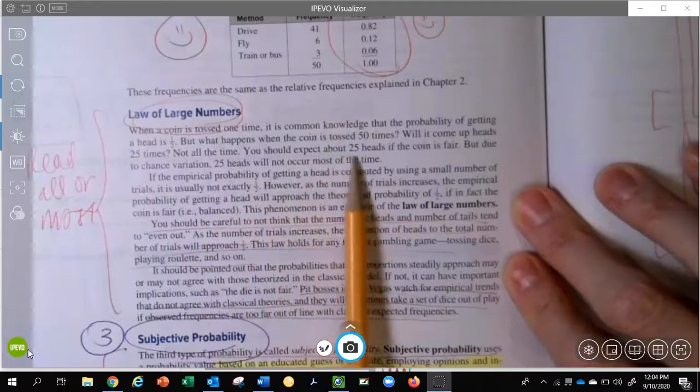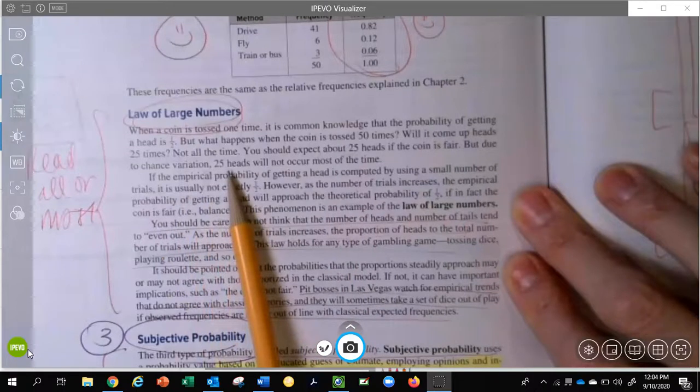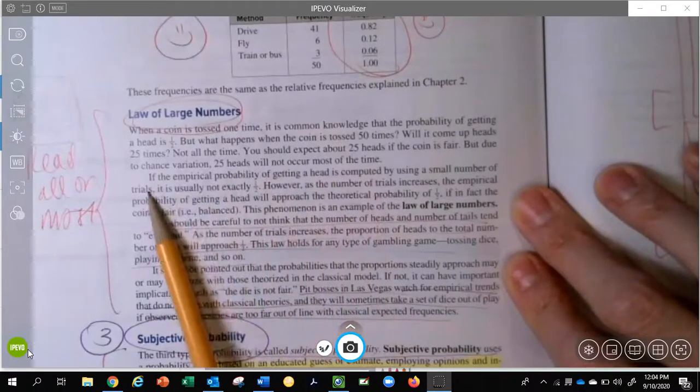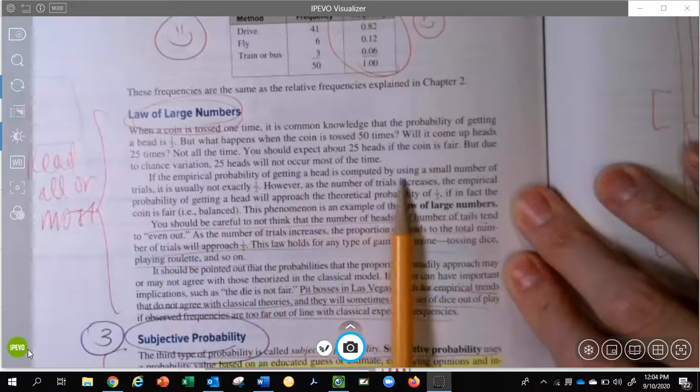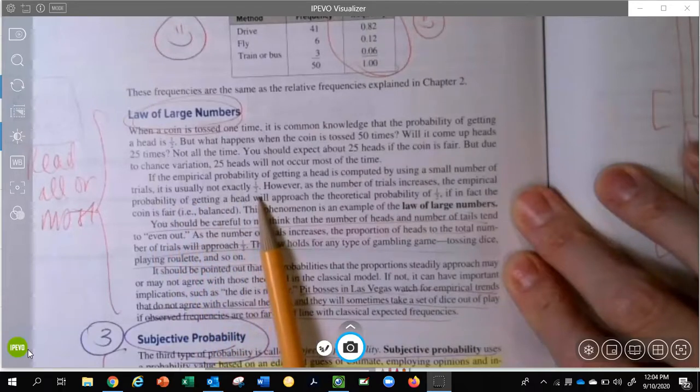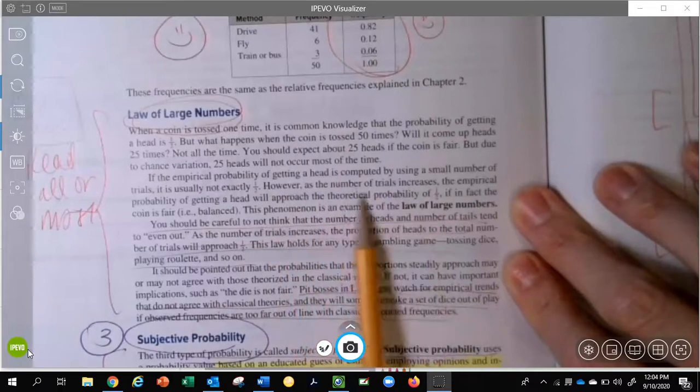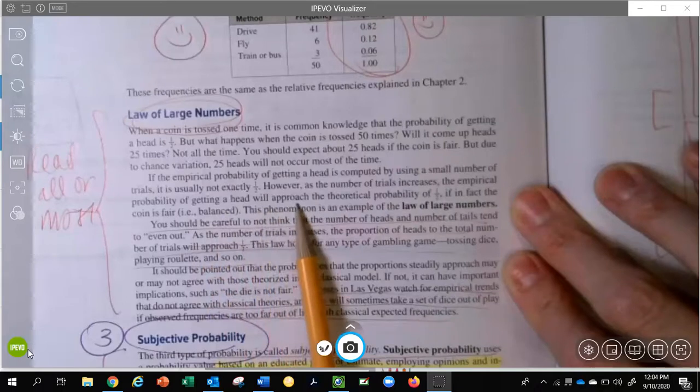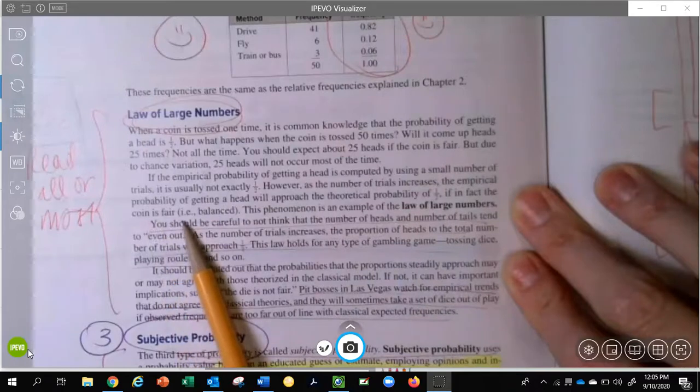You should expect about 25 heads if the coin is fair, but due to chance variation, 25 will not occur most of the time. If the empirical probability of getting a head is computed by using a small number of trials, it is usually not exactly one-half. However, as the number of trials increases, the empirical probability of getting a head will approach the theoretical probability of one-half, if, in fact, the coin is fair.